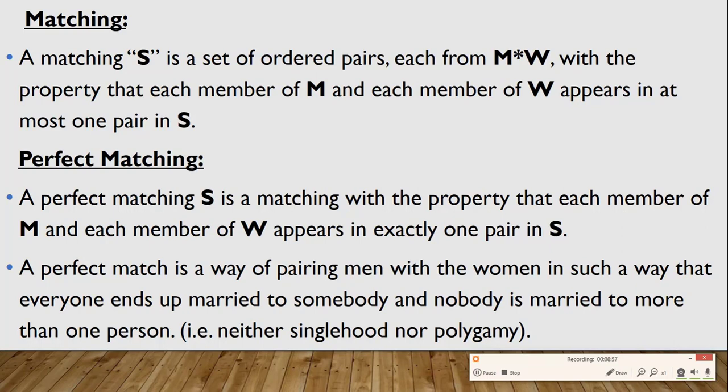The next terminology is perfect matching. A perfect matching is similar to matching but with an extra point: it is a way of pairing men with women such that everyone ends up getting married to somebody — that is, there is no singlehood — and nobody is married to more than one person, that is, no polygamy is allowed.